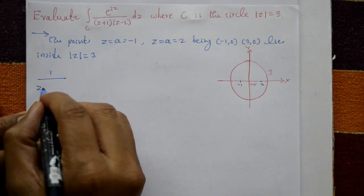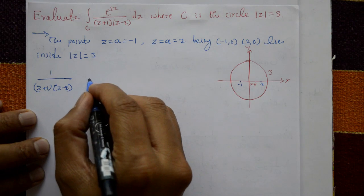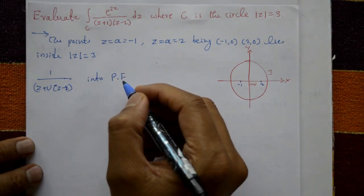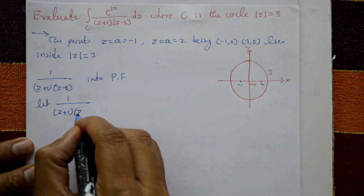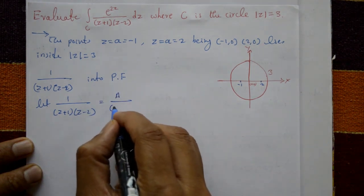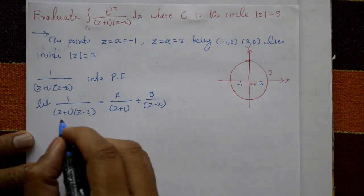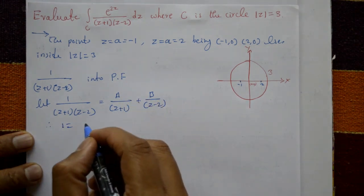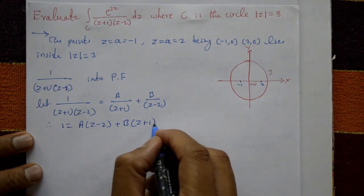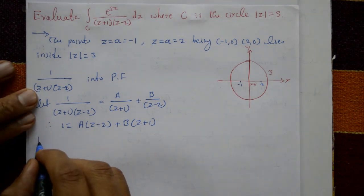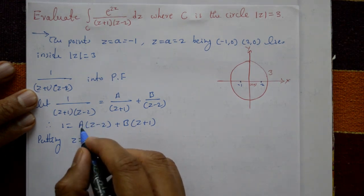Let 1 over (z+1)(z-2) equal A over (z+1) plus B over (z-2). Cross-multiplying, we get 1 = A(z-2) + B(z+1).